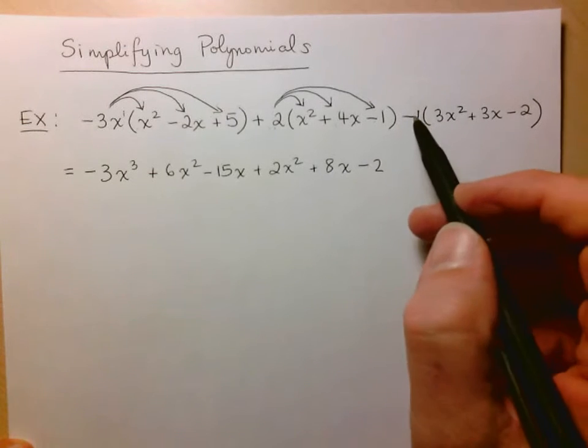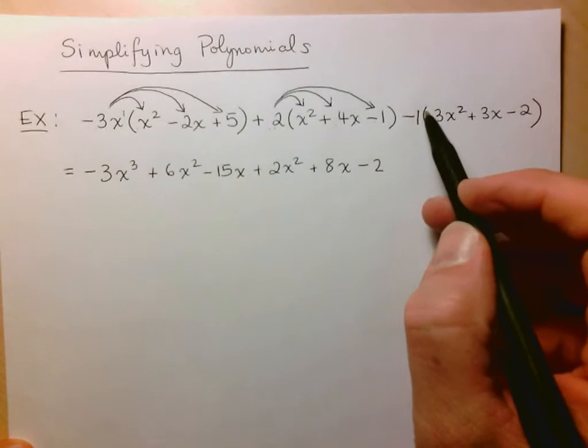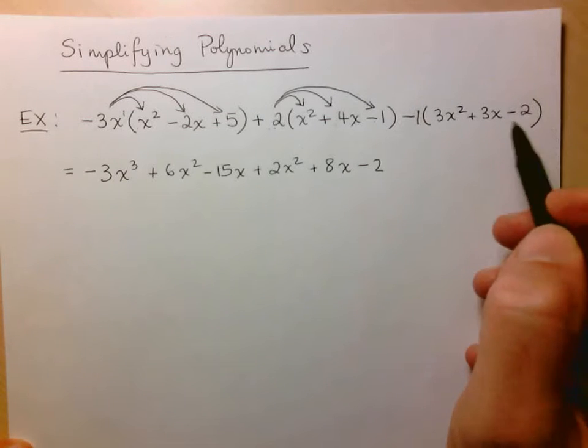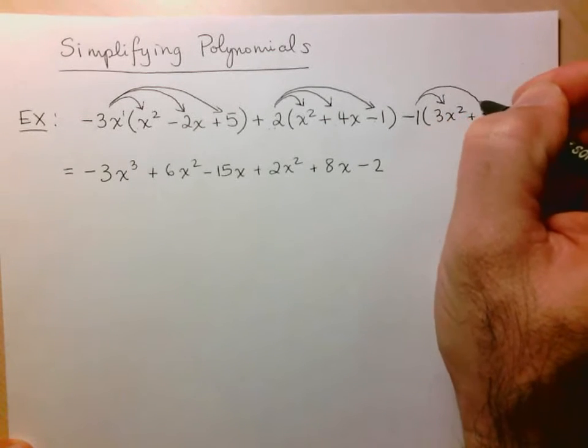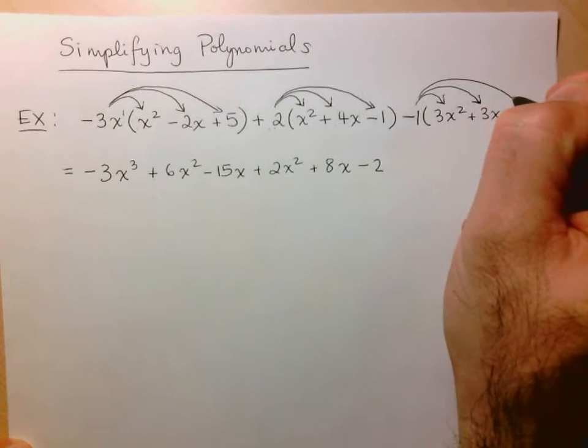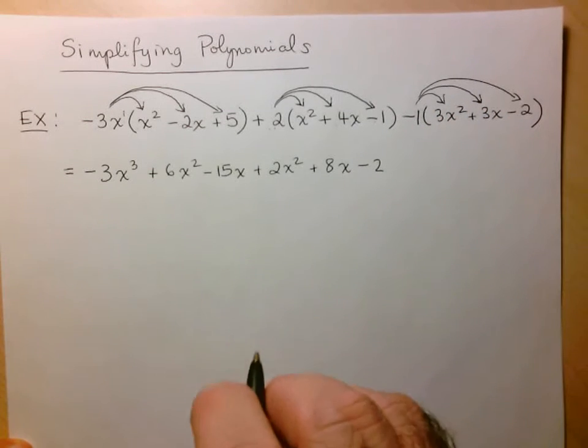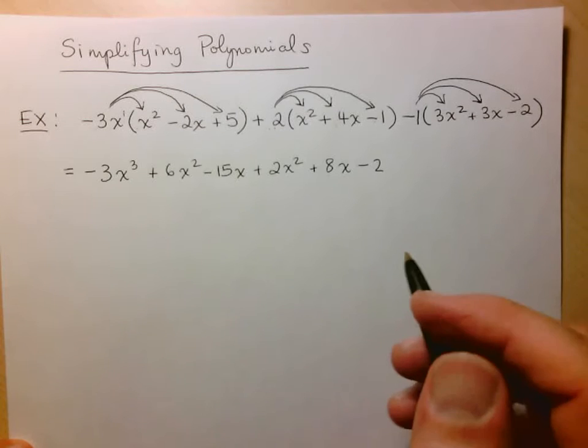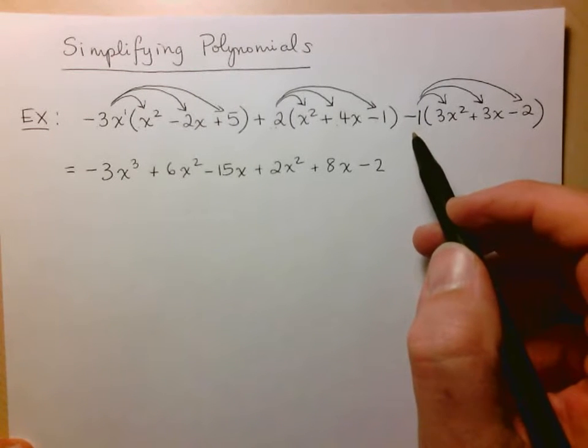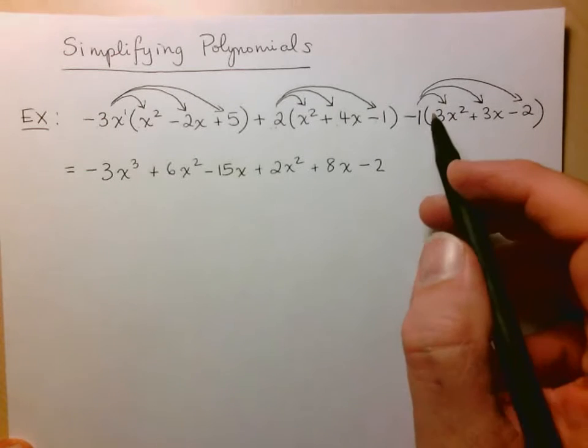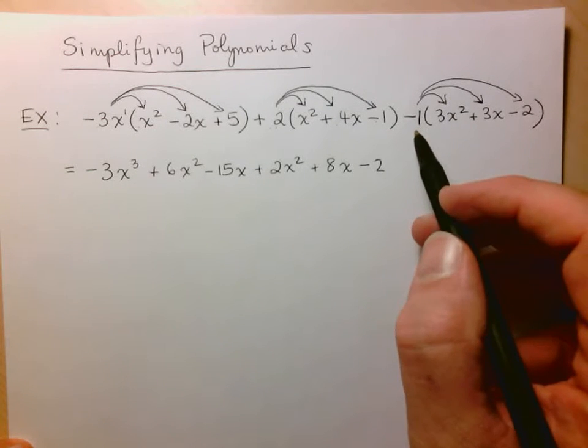Now here we had the subtraction, but remember we've got a negative 1 in front of this bracket. So as before, we have to distribute the negative 1 to every term in the bracket. Now, as you get more confident, you realize, wait a minute, multiplying something by negative 1 just changes its sign. So we're going to see that that's going to be the effect here.